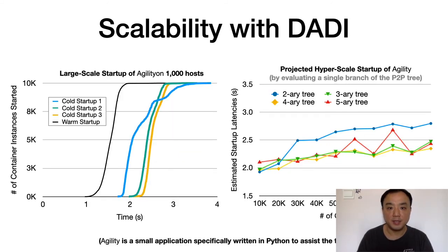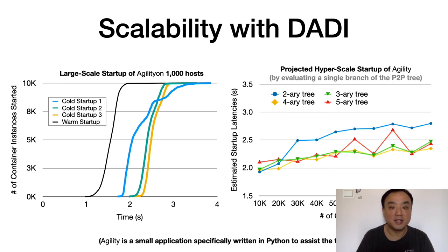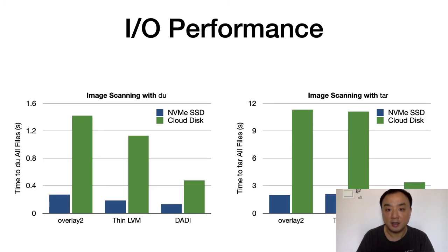We evaluate the startup latency with a specifically written application called Agility. It is a Python application that sends an HTTP request to a web server, which then records the timestamps when the requests arrive. The left figure shows the results of starting 10,000 containers on 1,000 hosts, including both cold and warm setups. The results indicate that DADI is effective at starting a large container cluster. The right figure shows the projected results of starting a hyperscale container cluster by evaluating only a single branch of the P2P tree, indicating that DADI is highly scalable. We evaluate IO performance with fio and TAR, comparing against OverlayFS and LVM. The results show that DADI performs better than both of them on both SSD and Cloud Disk.